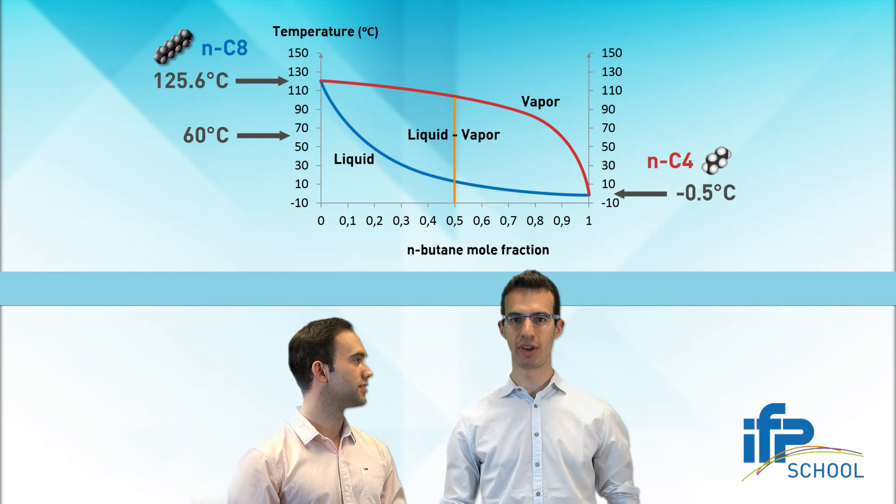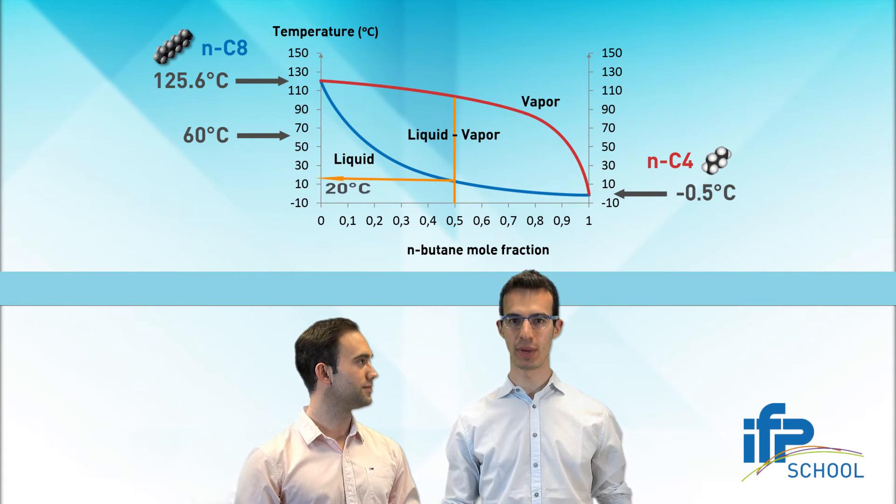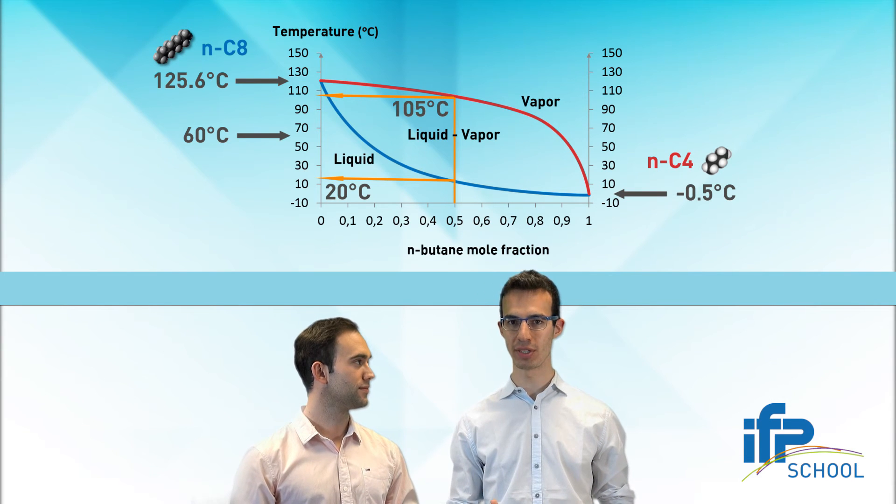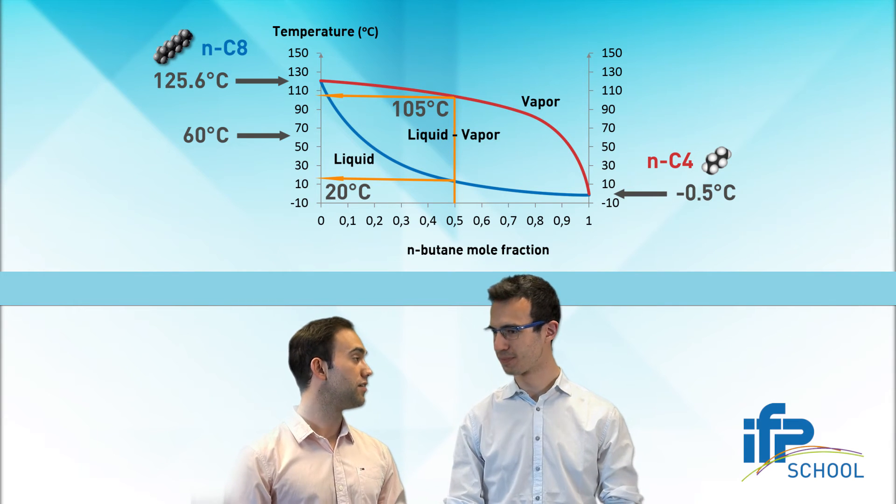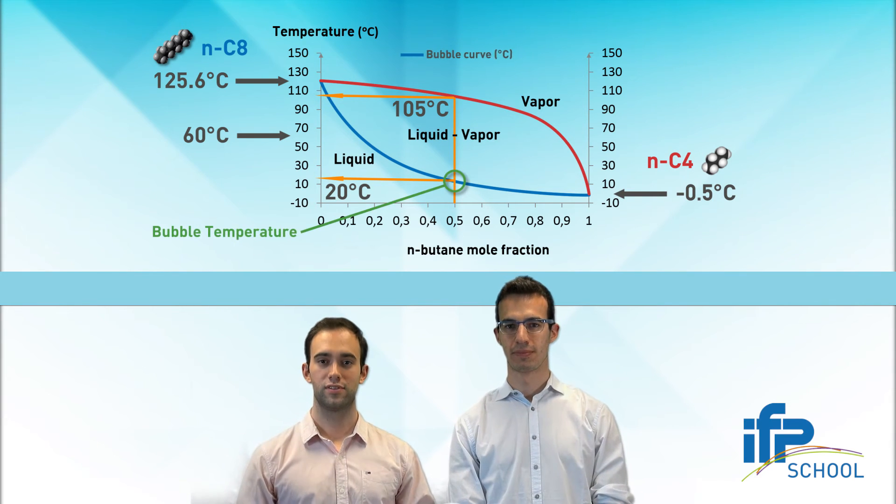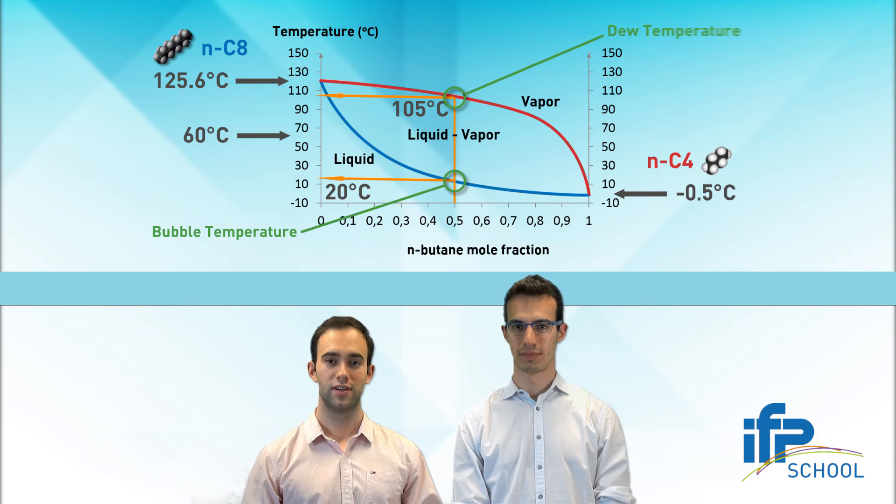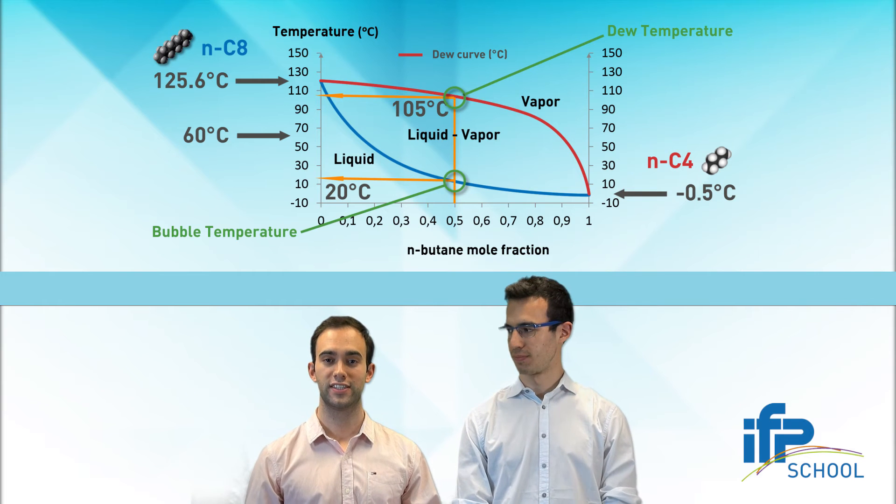Yes, I get it. So if I read the curve from the bottom up, I can see that the boiling point of my 50-50 mixture is 20 degrees Celsius and that it keeps evaporating until 105 degrees Celsius. That's a very wide range! Yes, you got it. In fact, the lowest temperature is called the bubble temperature, where the first bubble appears in the mixture. The highest temperature is called the dew temperature, because at that point the mixture becomes entirely vapor.